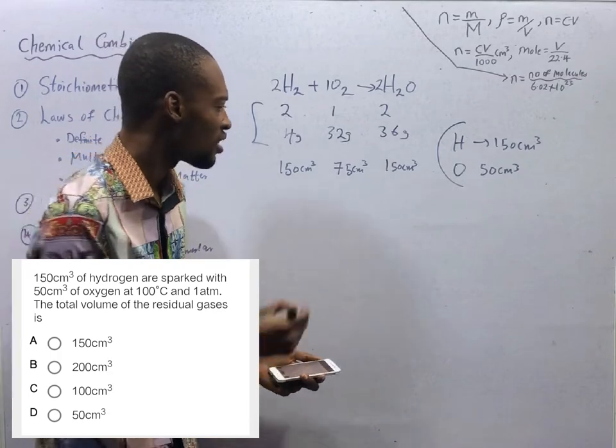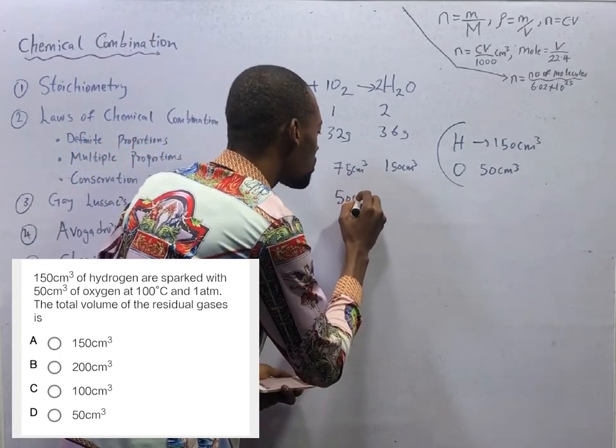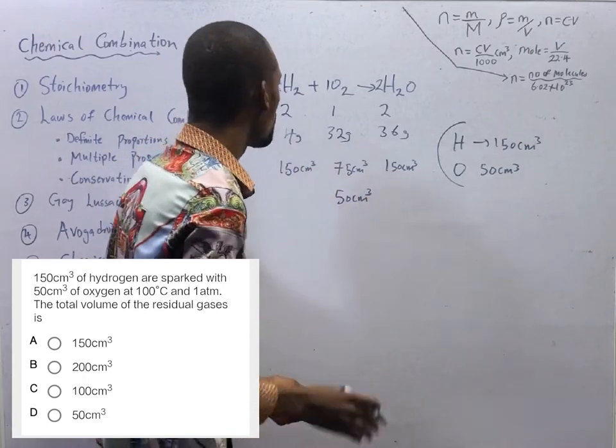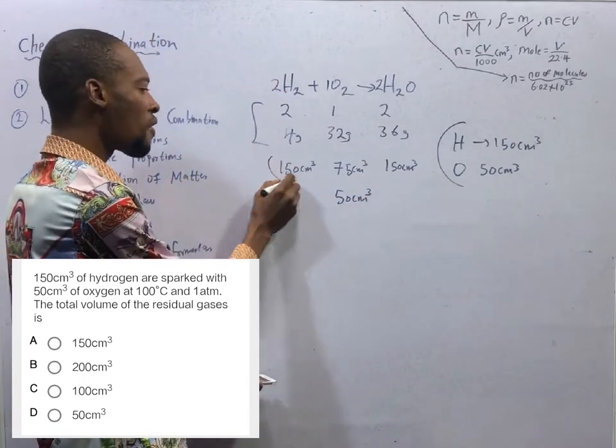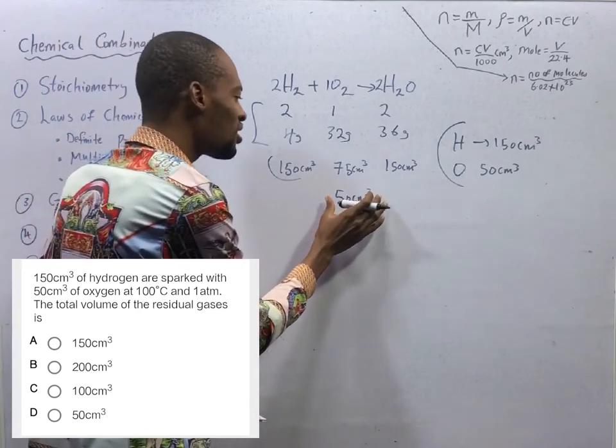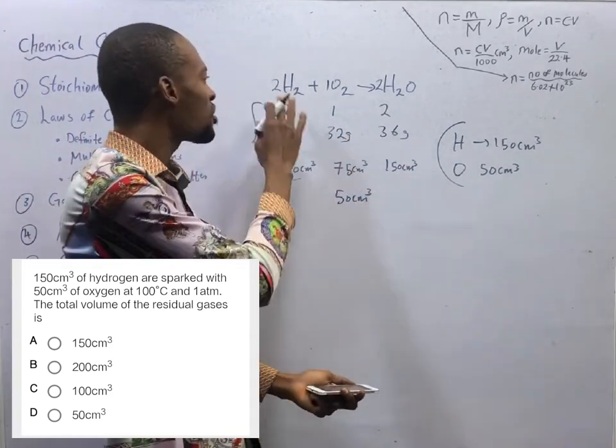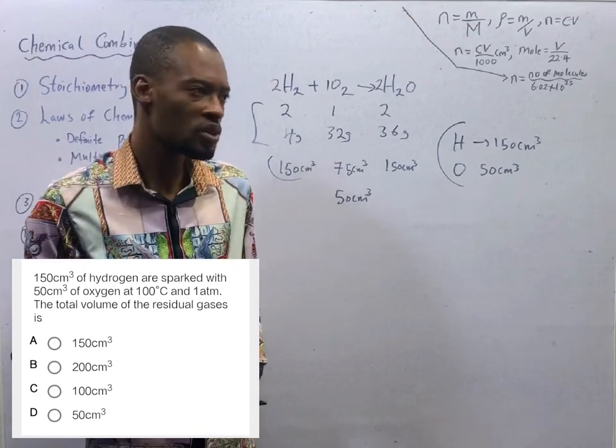What does that mean? The oxygen they gave us is not enough. Since the oxygen they gave us is not enough, we can therefore not use all the hydrogen. Oxygen will determine the product formed. It is the limiting reagent. Hydrogen is in excess.